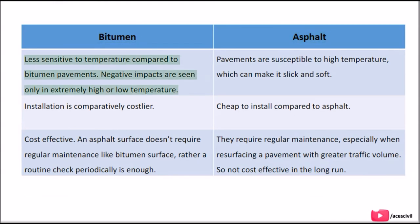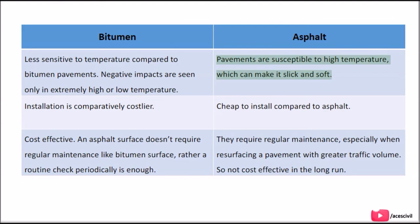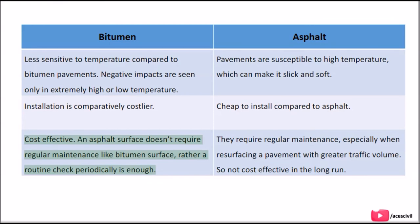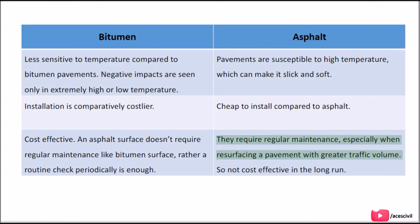Asphalt is less sensitive to temperature compared to bitumen pavements — negative impacts are seen only in extremely high or low temperatures. Bitumen pavements are susceptible to high temperature, which can make them slick and soft. Installation of asphalt is comparatively costlier, while bitumen is cheap to install. However, an asphalt surface doesn't require regular maintenance like a bitumen surface — a routine periodic check is enough. Bitumen requires regular maintenance, especially when resurfacing a pavement with greater traffic volume, so it is not cost-effective in the long run.